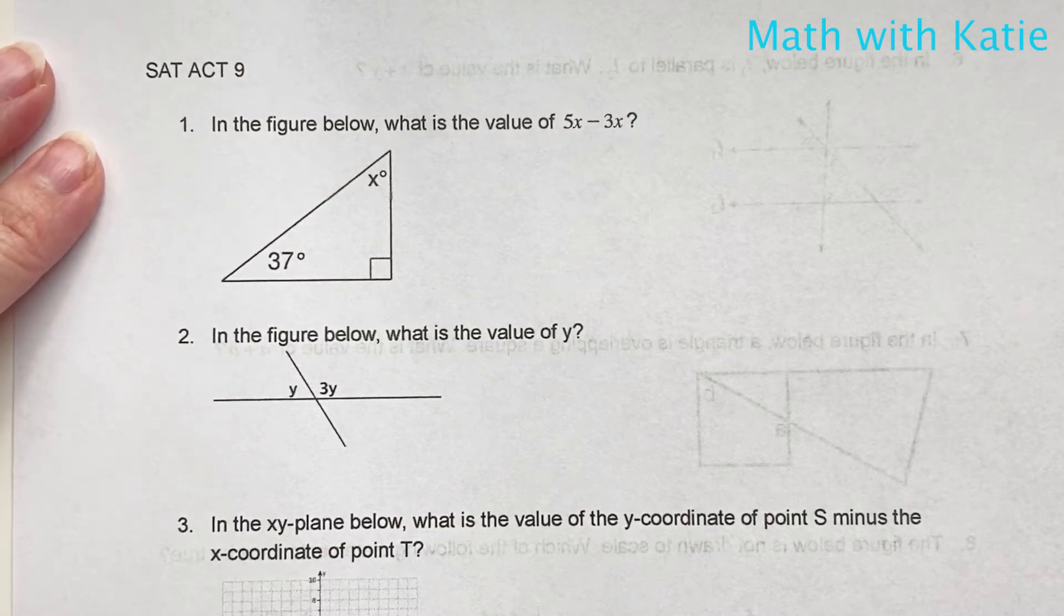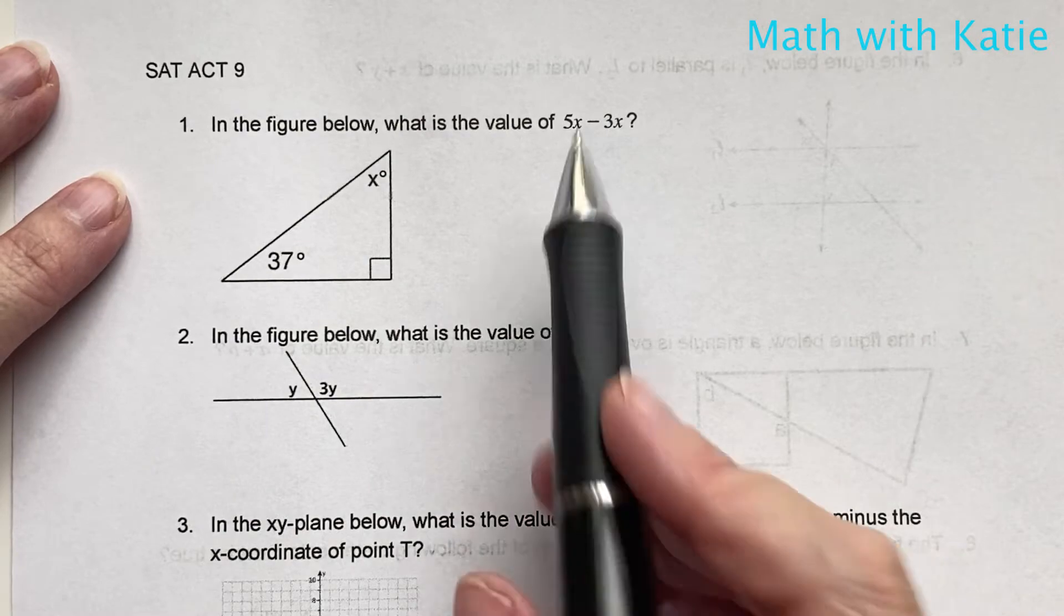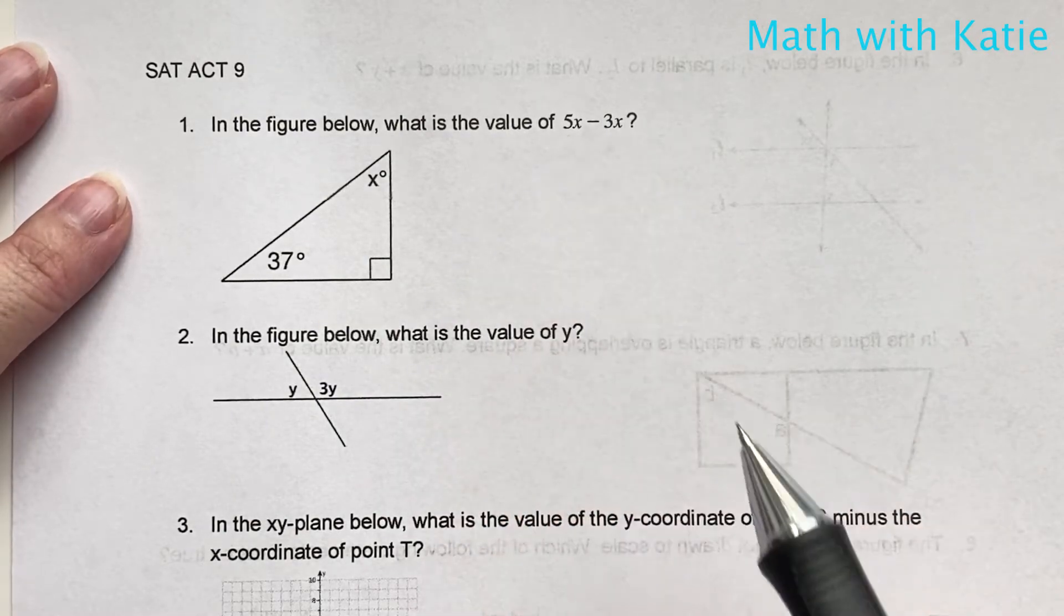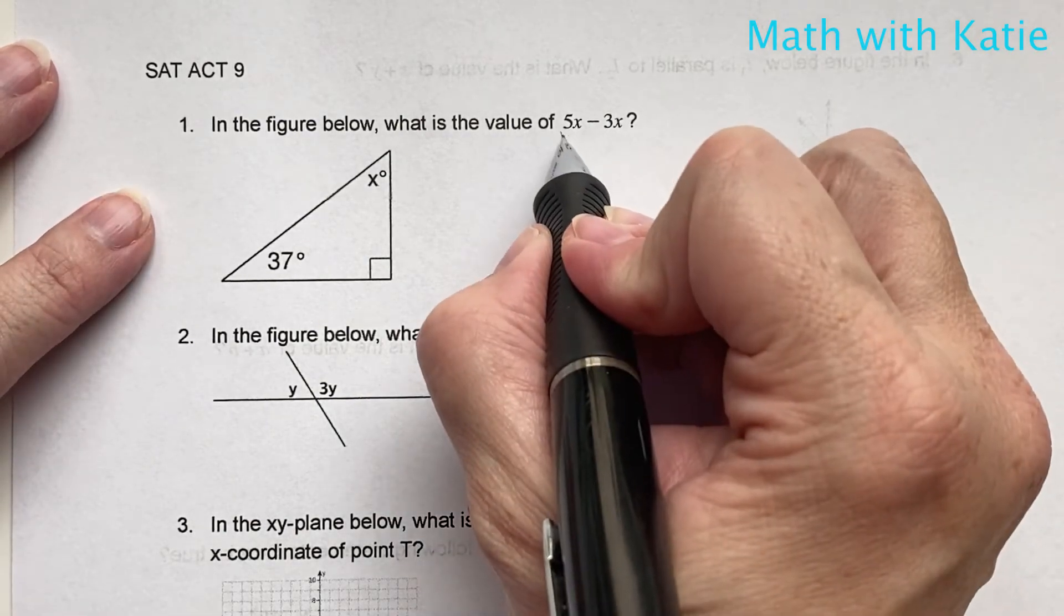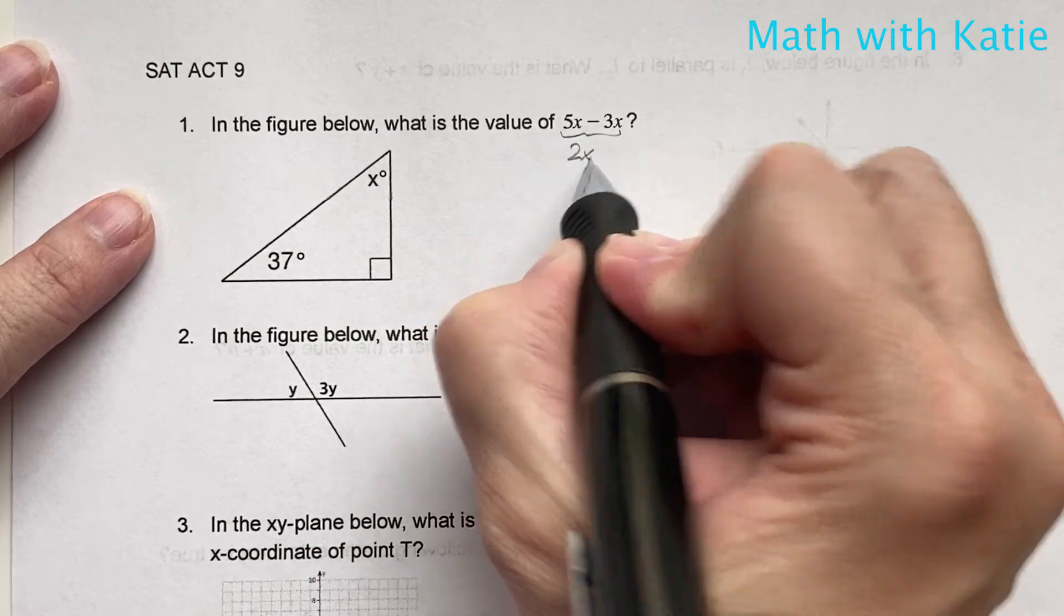Okay, number 9. In the figure below, what is the value of 5x minus 3x? Well, let's go ahead and reduce that. That's just 2x.